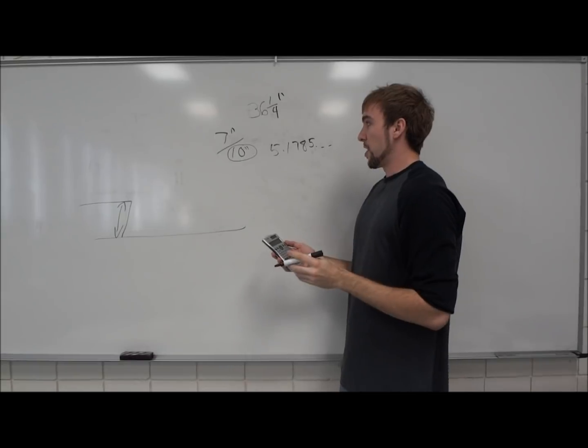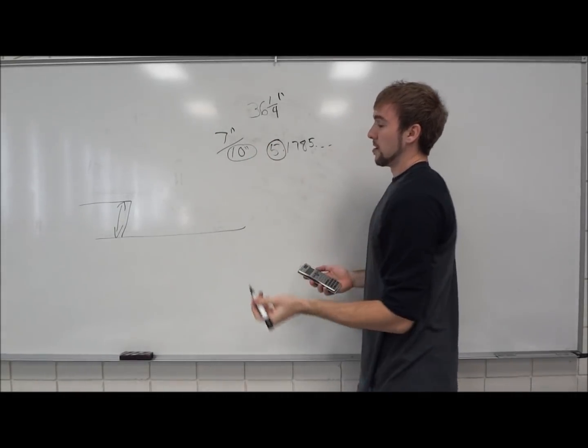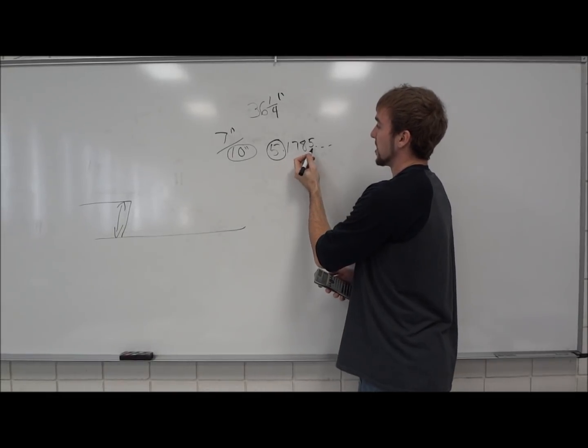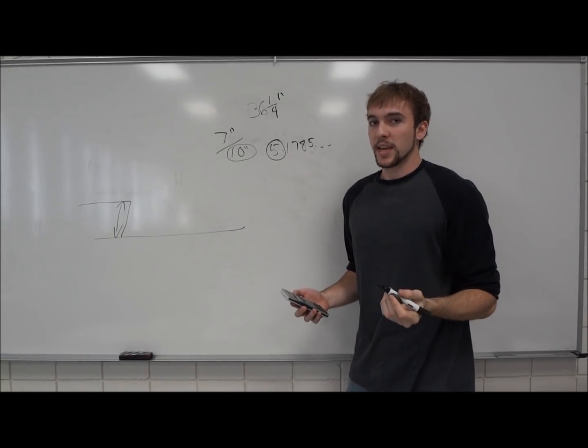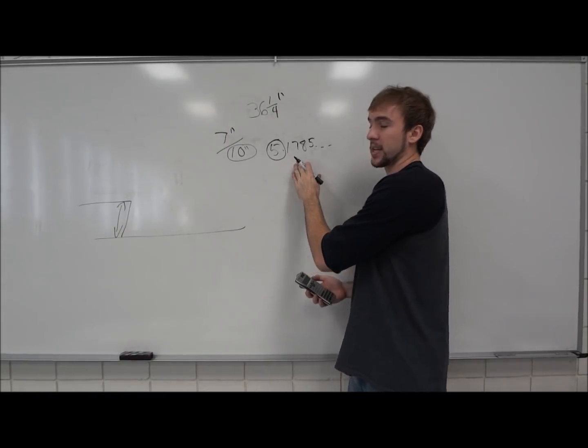Okay, so one thing that we did find out is it's going to be 5 steps. But obviously, you can't have a .1785 of a step. So in this case, we're just going to round it off and just be either 5 or 6 steps.